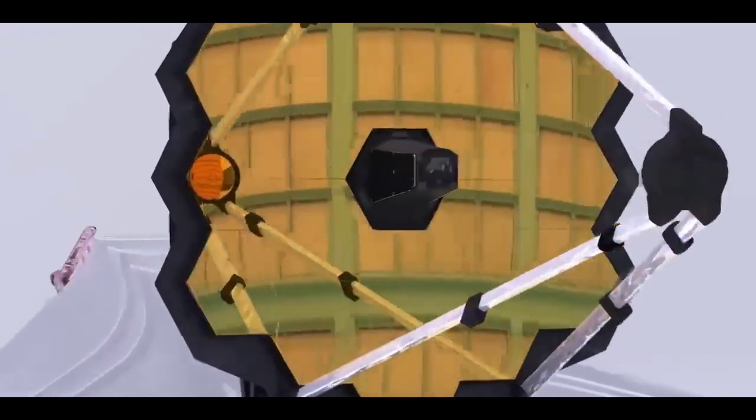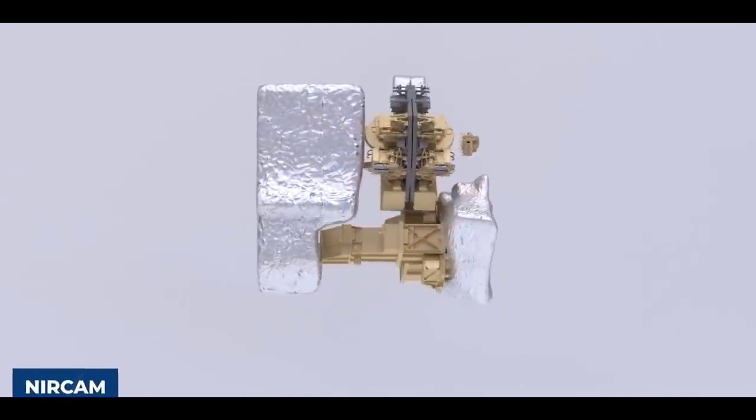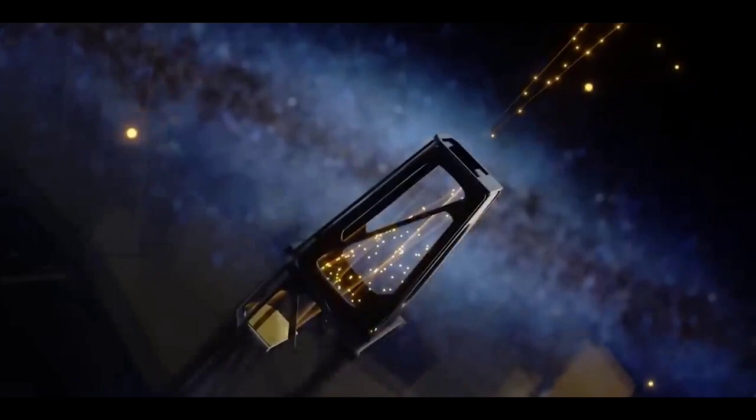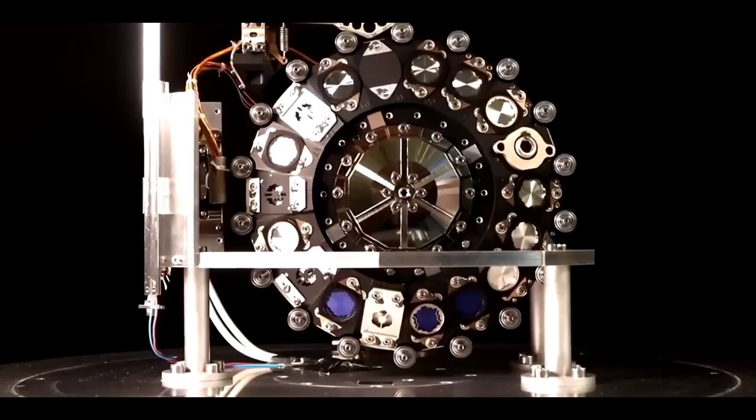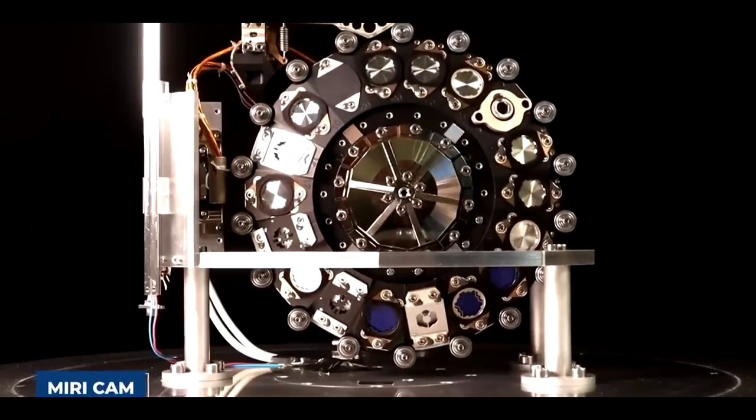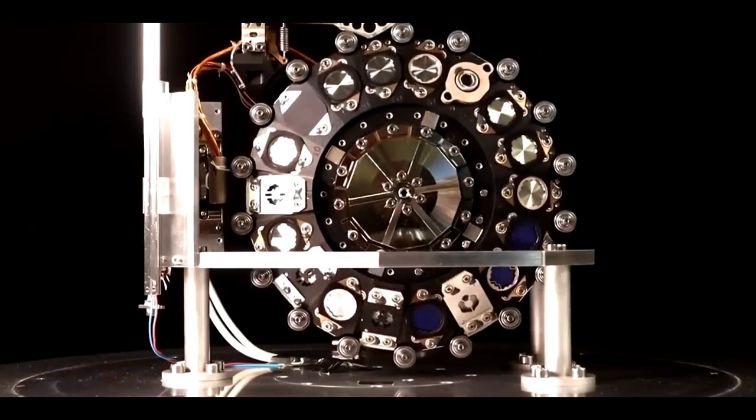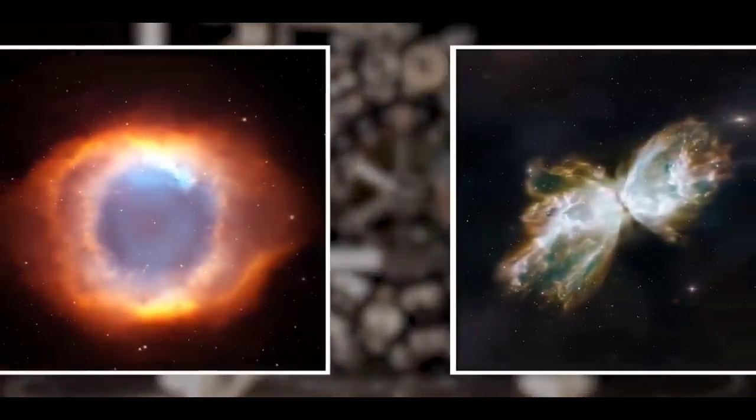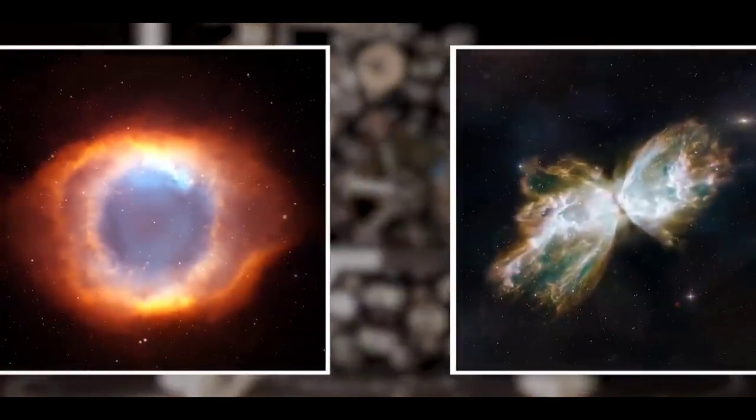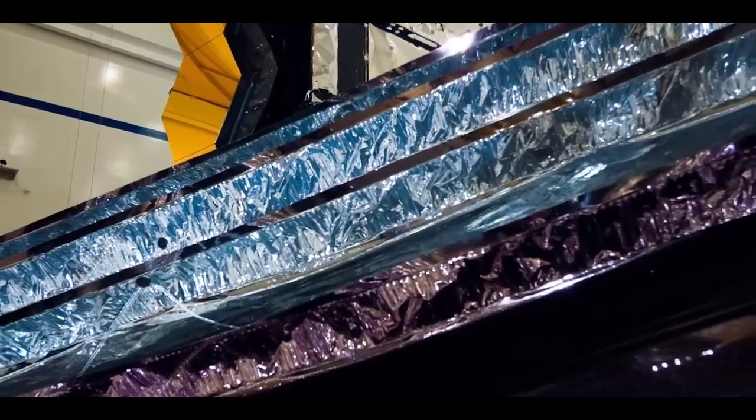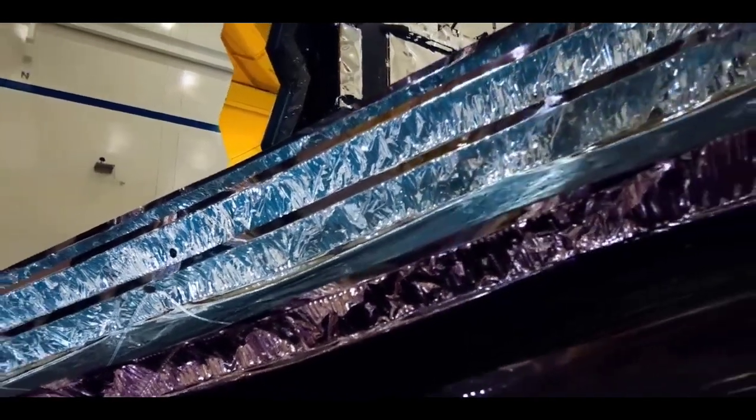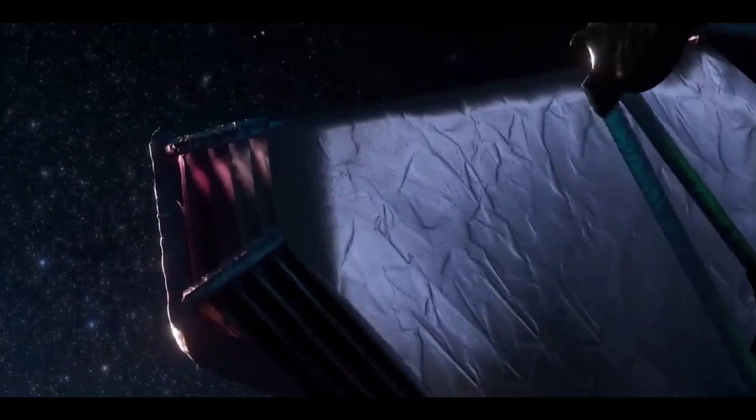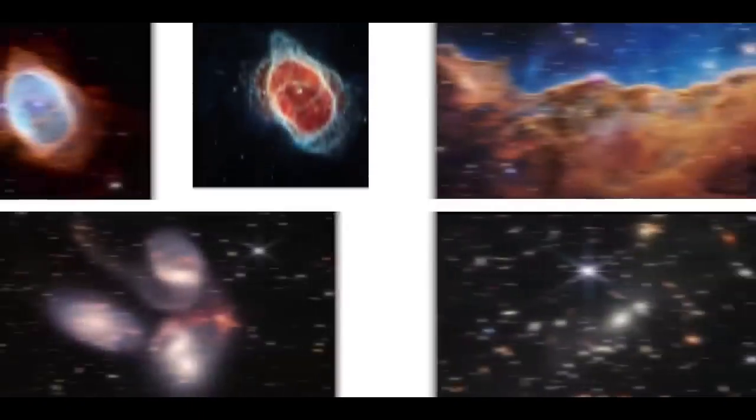Eighteen hexagonal mirror segments made of gold-plated beryllium combine to form a mirror having a 6.5 meter diameter. The James Webb has two infrared cameras. The first one is the near infrared camera, also called NIRCam, which captures the shorter infrared wavelengths. The second one is the mid-infrared instrument or MIRI cam, which captures the longer infrared wavelengths. The photos vary depending on which camera was used to capture them. It also uses a five-layer sun shield constructed from Kapton to block light and heat from the sun, moon, and Earth.